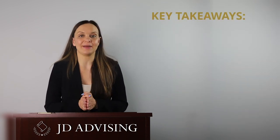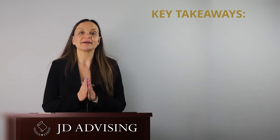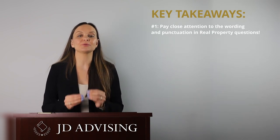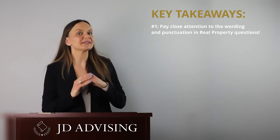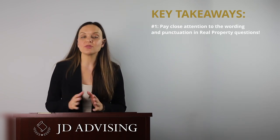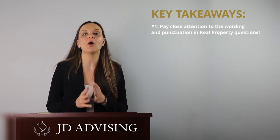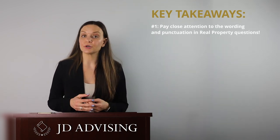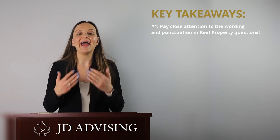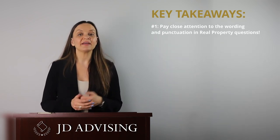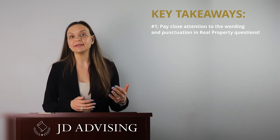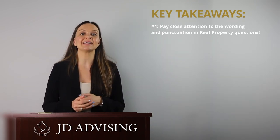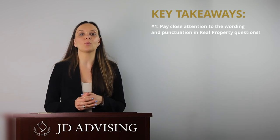The two takeaways from this problem are as follows. First, pay close attention to the wording and punctuation in real property questions. This subject is all about form, and the wording the question uses can make all the difference. For example, to create a joint tenancy, the words 'joint tenancy with rights of survivorship' have to be used. If a conveyance merely says 'jointly' or 'as joint owners,' that is not sufficient and a tenancy in common will be created instead.